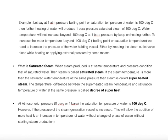For example, at one bar absolute pressure, the boiling point or saturation temperature of water is 100 degrees centigrade. Further heating of water will produce one bar absolute pressure saturated steam at 100 degrees centigrade. Water temperature will not increase beyond 100 degrees centigrade at one bar pressure. To increase the water temperature beyond the boiling point or saturation temperature, we need to increase the pressure of the water-holding vessel — either by keeping the steam outlet valve closed while heating, or by applying external pressure by some means. That is how we produce high pressure steam.